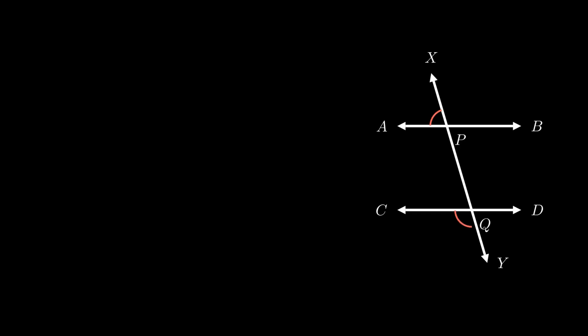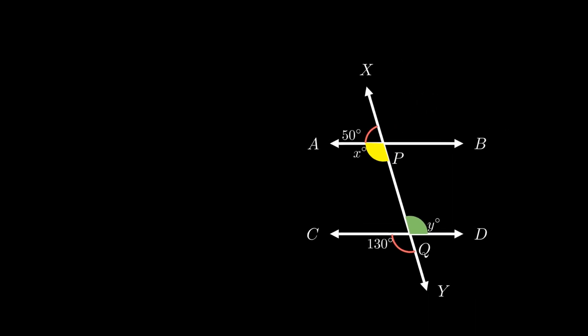The problem states that line AB is parallel to line CD such that the transversal XY subtends angle APX equals 50 degrees and angle CQY equals 130 degrees. We need to find the value of angle APQ, which is equal to X, and angle PQD, which is equal to Y.